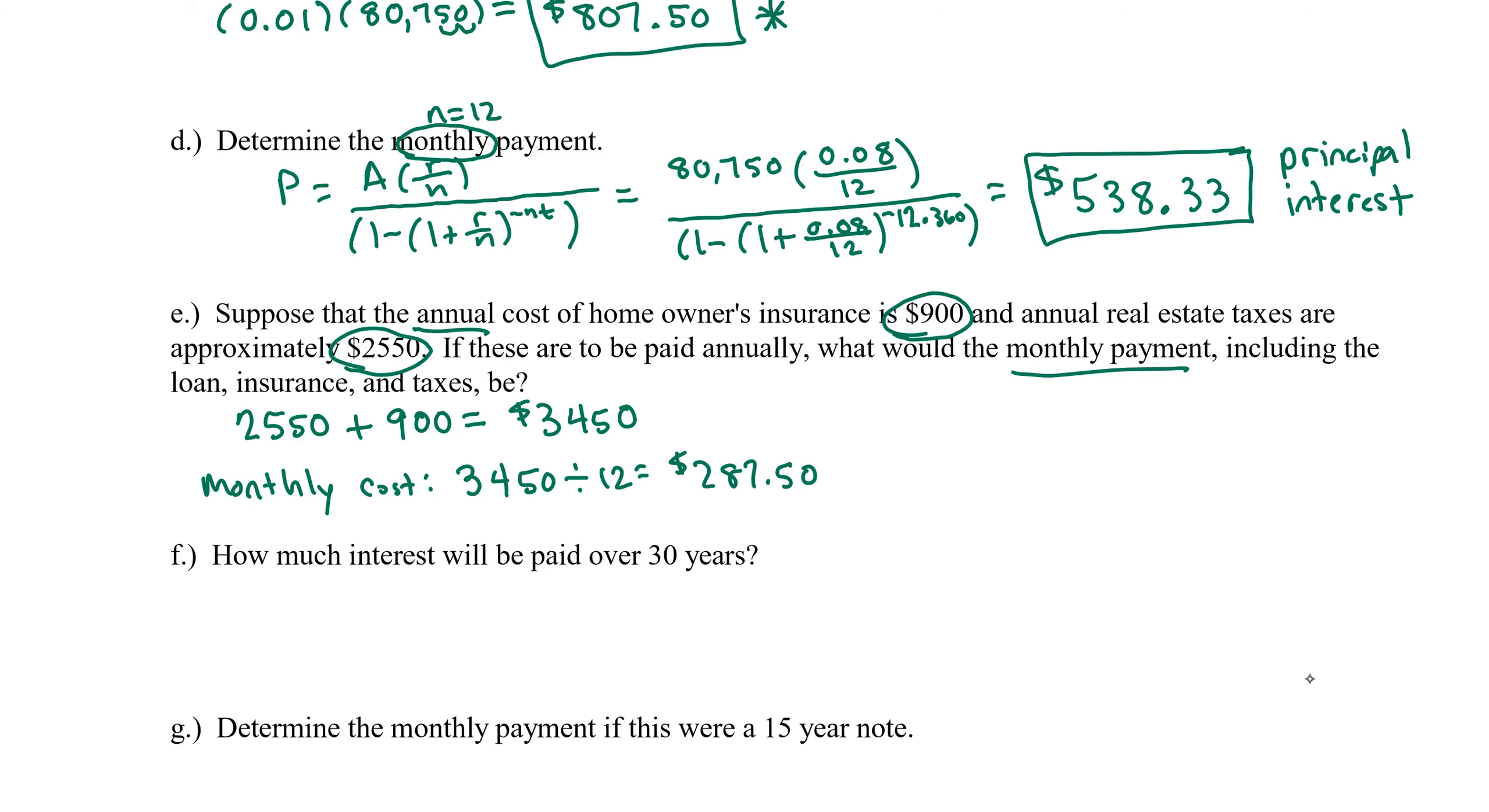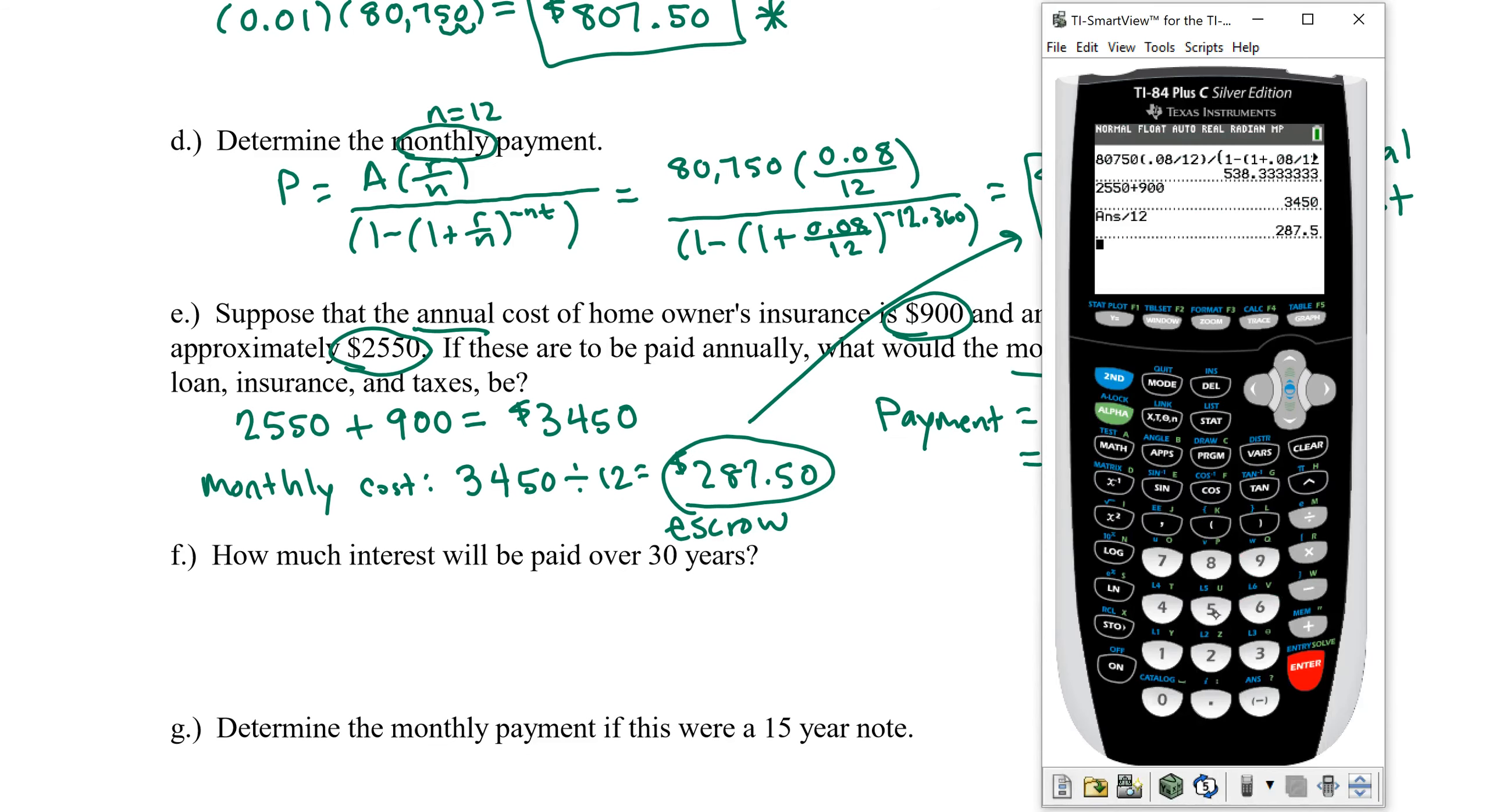That gives us $287.50. This is tacked on to our payment. This part goes into the escrow account. So our total monthly payment then would be the loan payment, which covers principal and interest, plus homeowners insurance and real estate taxes. Let's add those two together and see what we come up with.